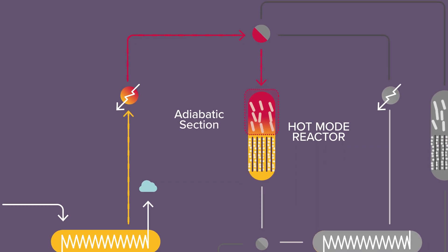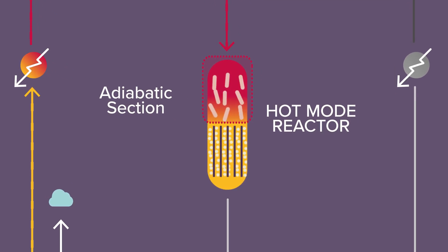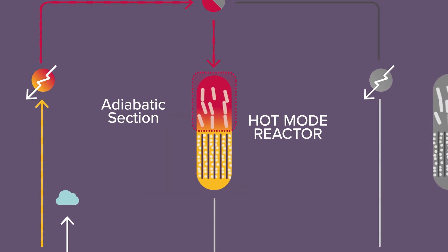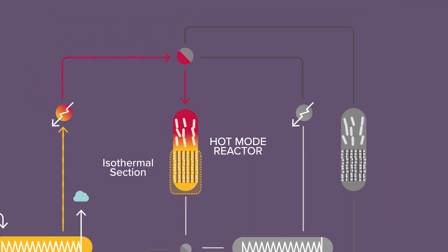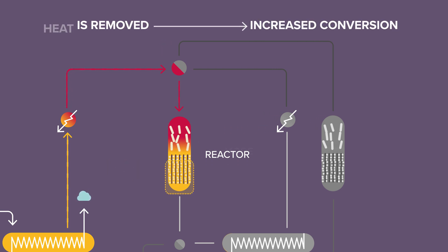In the adiabatic top section of the reactor, COS and CS2 are converted at high temperature. The gas then flows to the isothermal bottom section, where the heat of reaction is removed by the embedded cooler, consequently increasing the conversion of the Klaus reactions.